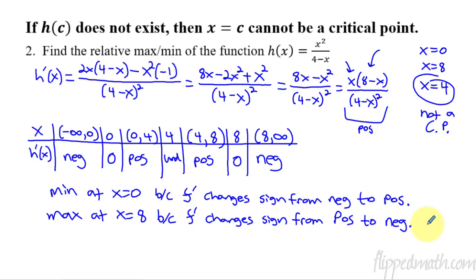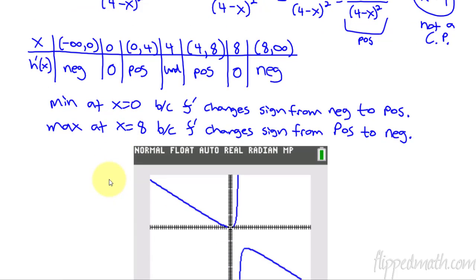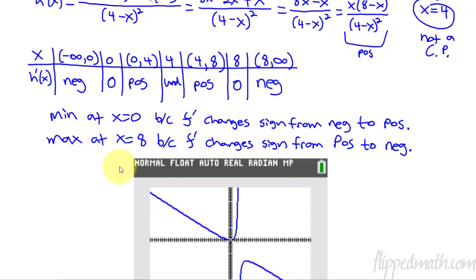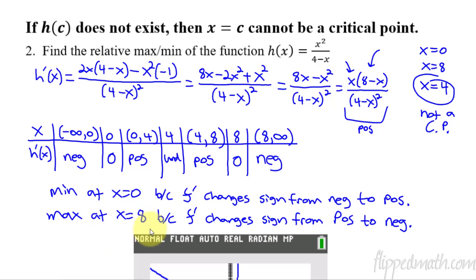Here's what this graph looks like — this weird thing. You can see the minimum at x equals 0 right there, the max at x equals 8, and the vertical asymptote where the function is undefined at x equals 4. The undefined point still helped us determine whether nearby points were mins or maxes, so it's important to still include these undefined points in your interval chart.